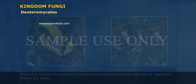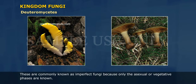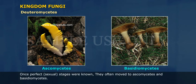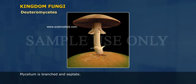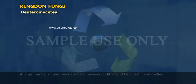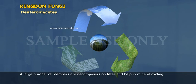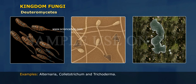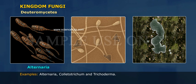Deuteromycetes are commonly known as imperfect fungi because only the asexual or vegetative phases are known. Once perfect sexual stages were discovered, they were often moved to ascomycetes and basidiomycetes. Mycelium is branched and septate, and asexual spores are conidia. A large number of members are decomposers of litter and help in mineral cycling. Examples include Alternaria, Colletotrichum, and Trichoderma.